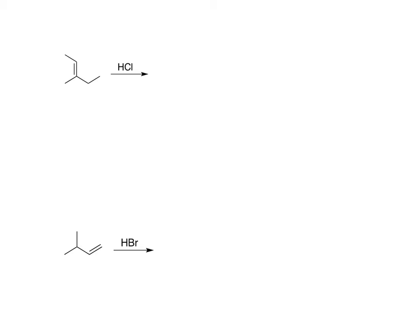What we're going to do is actually add across the double bond, and the way we're going to add is we're going to add a hydrogen to the least substituted, and we're going to add a halogen, in this case the chlorine, to the more substituted.